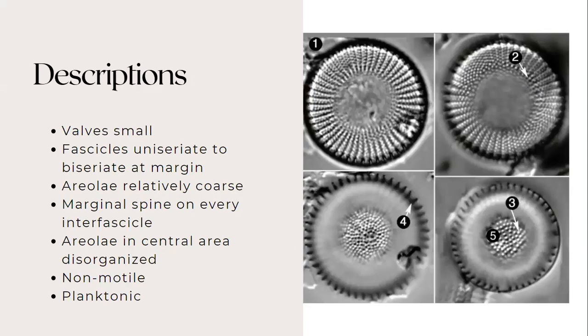the valves are small and cylindrical with strong concentric undulation. Fascicles uniseriate to biseriate at margin. The areolae are relatively coarse. And each interfascical costa has a spine positioned at the valve margin. The central area is either convex or concave with disorganized areolae. And this species is also non-motile and found in planktonic habitat.